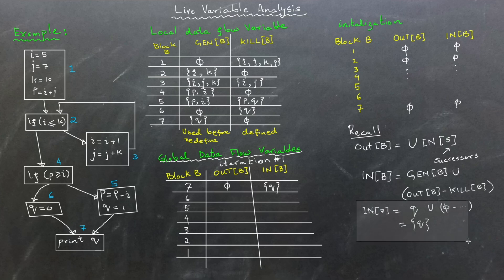For block 6, out 6 contains q which come from in 7, its only successor. In 6 is the union of gen 6 which is empty set and the difference between out 6 and kill 6. Both out 6 and kill 6 contain q so their difference is an empty set, leaving in 6 empty.